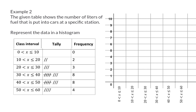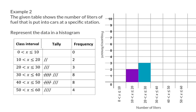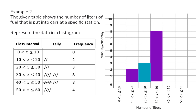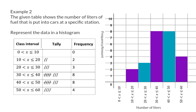For Example 2, the given table shows the number of liters of fuel put into cars at a specific station. Represent the data in a histogram. The x-axis will always represent the class intervals — in this case, the number of liters — and the y-axis will be the frequency, which is the number of people in each class interval. The first class interval had a frequency of 0. Two people filled with 10 to 20 liters, three people with 20 to 30 liters, eight people with 30 to 40 liters, another eight with 40 to 50 liters, and finally four people with 50 to 60 liters. And here we have a complete histogram.